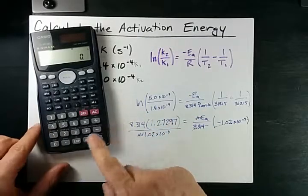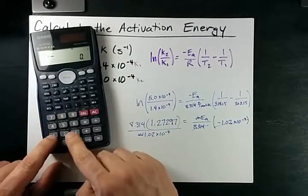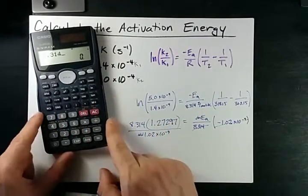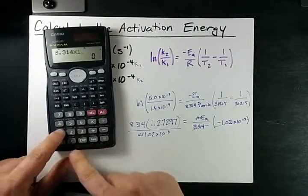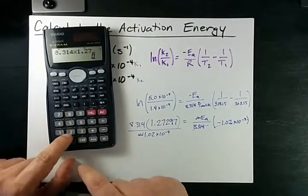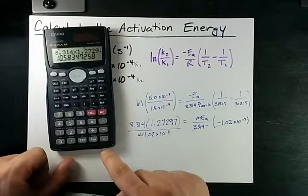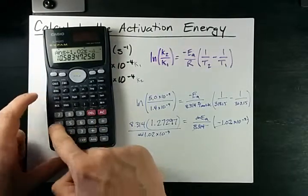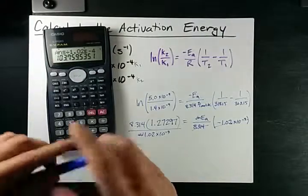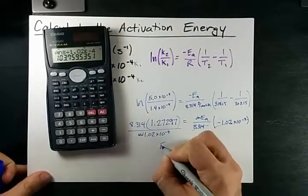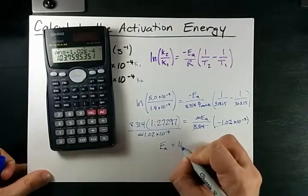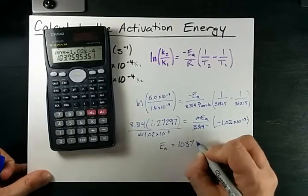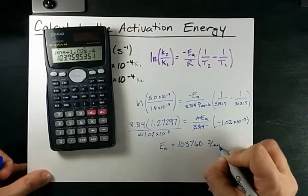Let's just do it all at once so you can watch me do it. 8.314 times 1.27297 divided by 1.02 times 10 to the negative 4. This gives me an EA of 103.760 joules per mole.